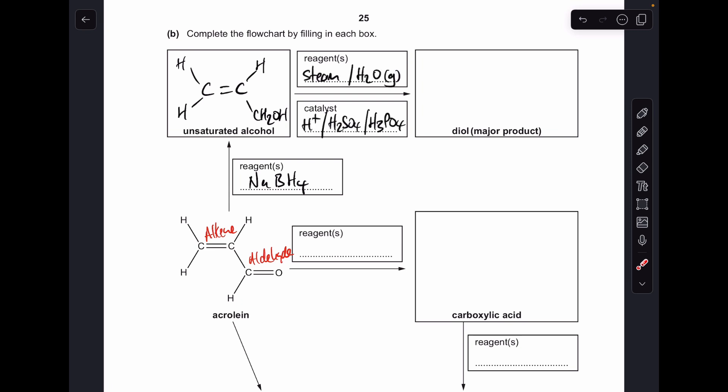So we've got a few options for our answers. We could write the word steam or H2O with the gaseous state symbol. Catalyst-wise we could put H+ to represent the acid. I would actually name the acid and the two options you've got are sulfuric acid or phosphoric acid.